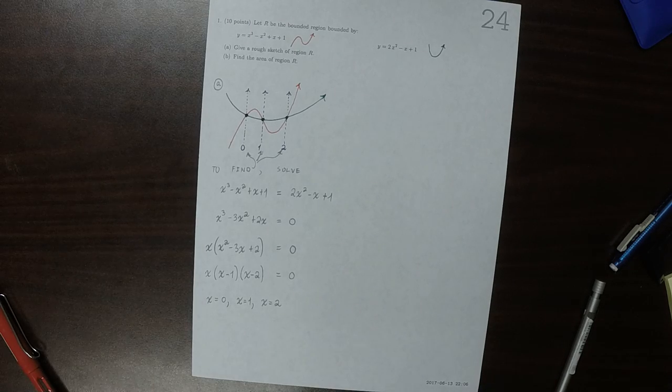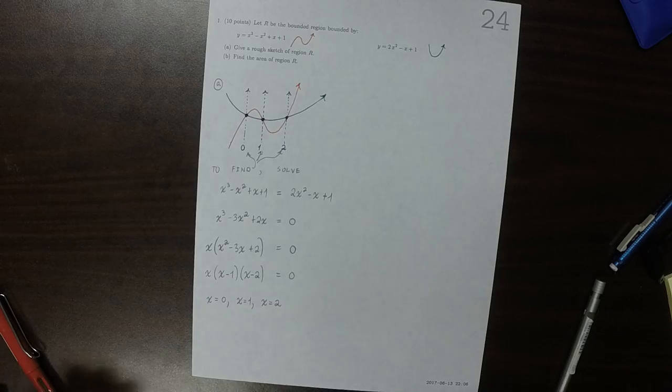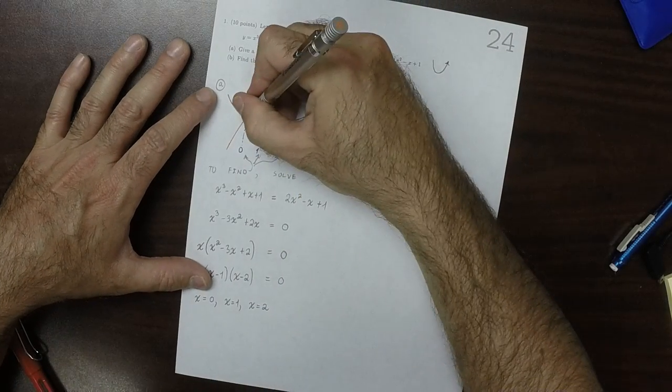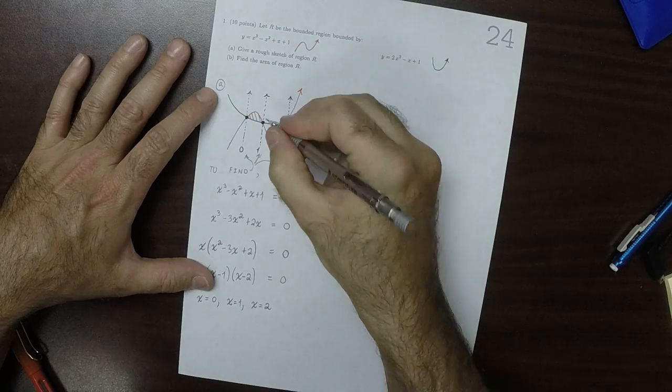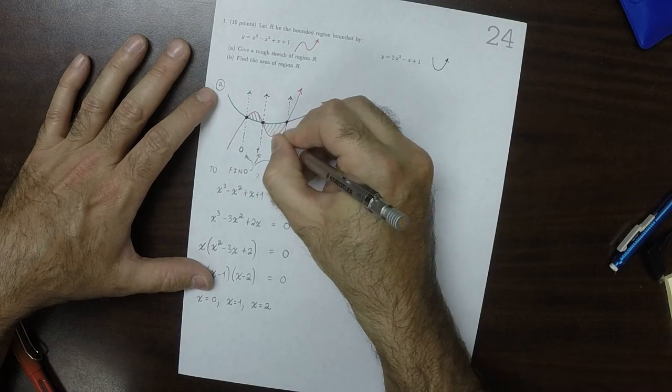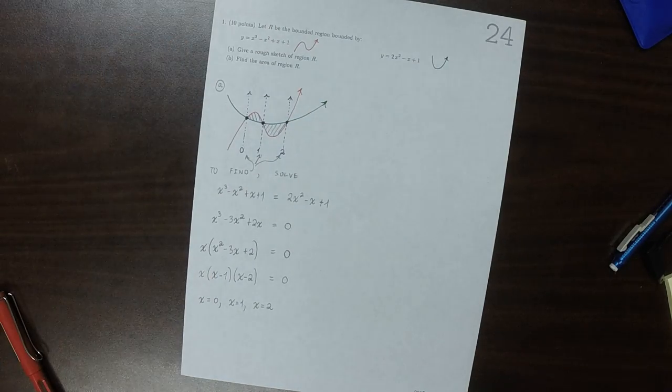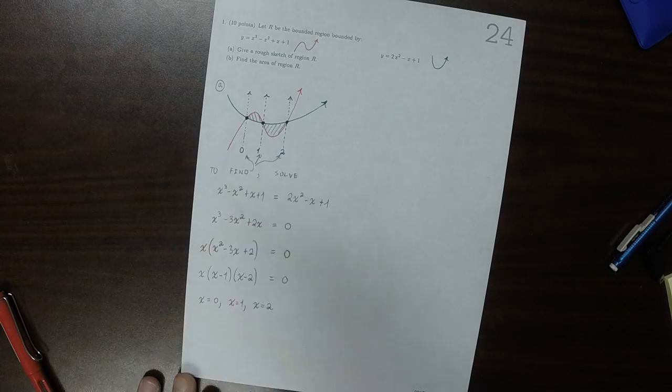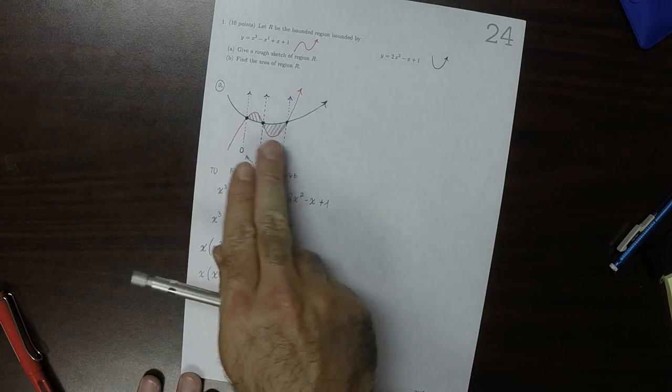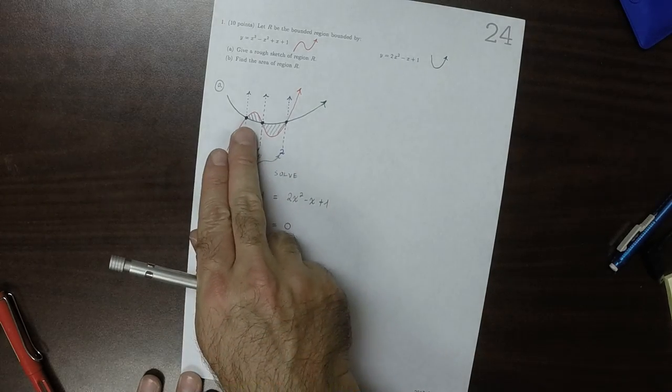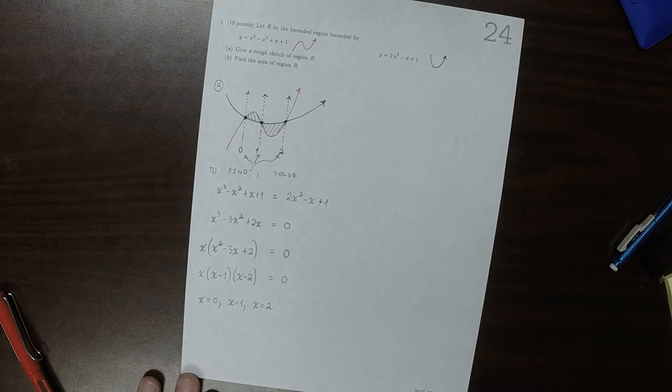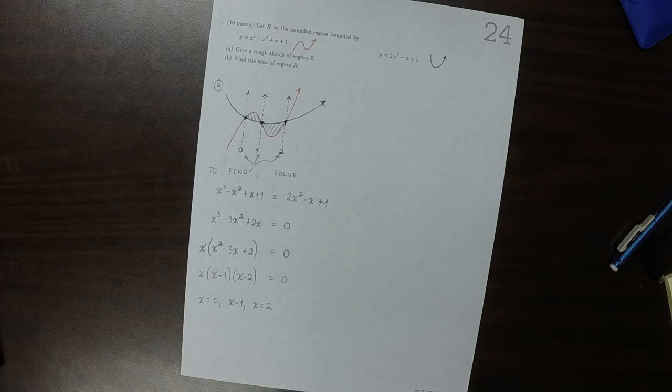So our suspicion was correct. And the region R is all of the shaded region. And you can see that it consists of two distinct pieces, the piece on the left and the piece on the right. So that's the sketch of the region.